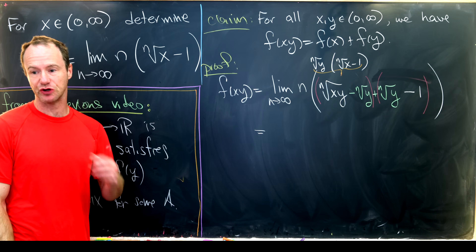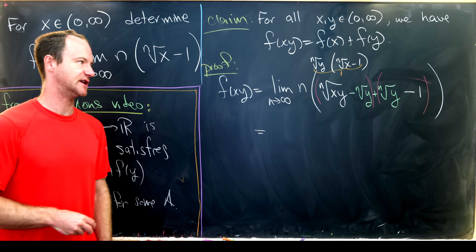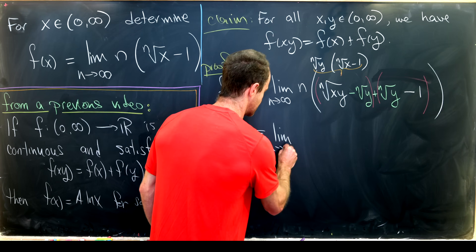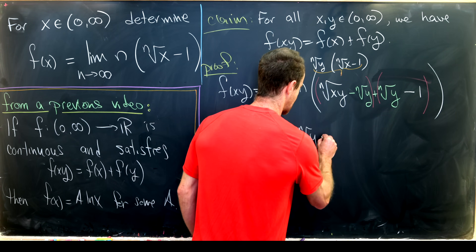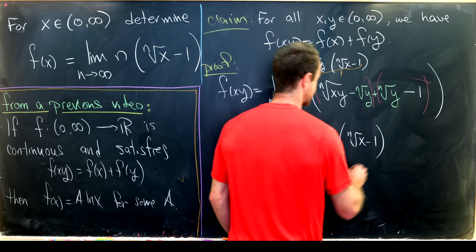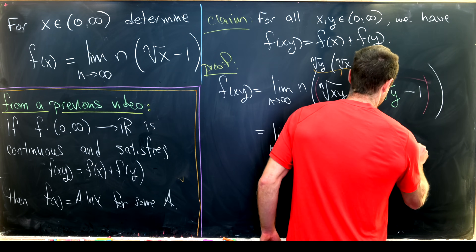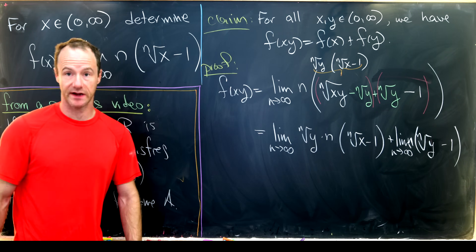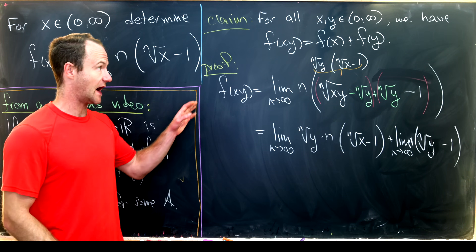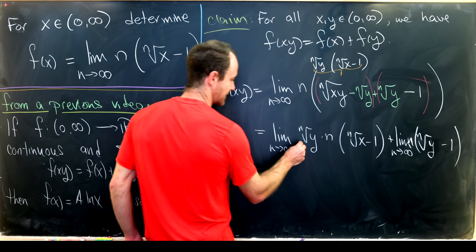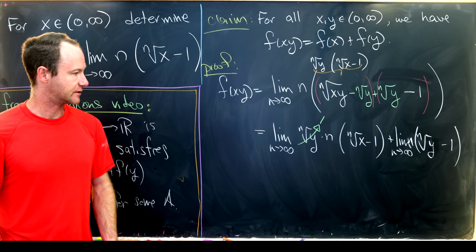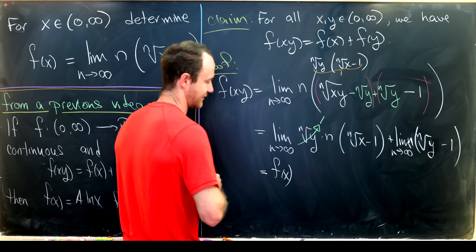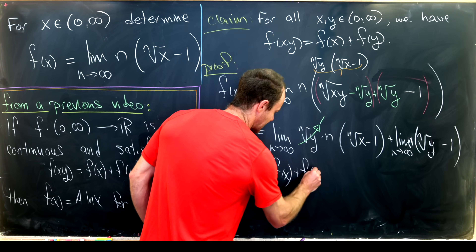We split the limit into two — noting this is the sketchy part, only valid if the limits exist. This gives the limit as n goes to infinity of the nth root of y times n times (nth root of x minus 1), plus the limit as n goes to infinity of n times (nth root of y minus 1). As n goes to infinity, since y is a fixed positive real, the nth root of y goes to 1. So the first limit becomes exactly our definition of f(x), and the second limit is exactly our definition of f(y).